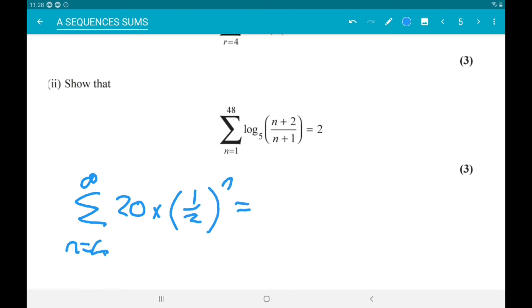Alright, so that's going to be the complete sum to infinity minus what we don't want. So we don't want the first three terms. So it's the sum to infinity minus the sum to three.